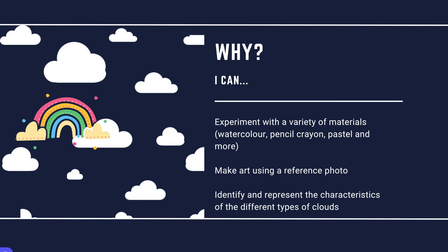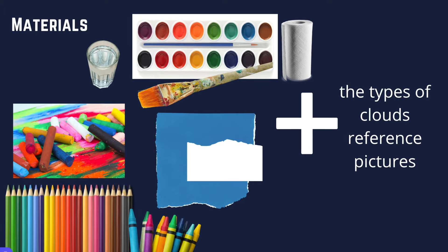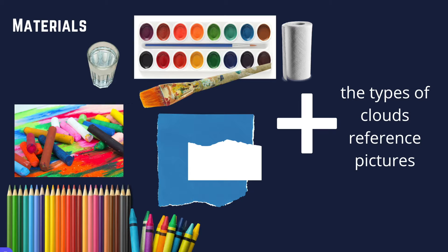For materials, use what you have at home. Blue construction paper works nicely — you can experiment with white pastel, pencil crayon, or crayon on top of it. I'm also using watercolor paints, which require a brush, paper towel, and water. For shading, some clouds have gray in them, so a pencil with a Q-tip works well. You'll also need the cloud reference pictures I've provided — view them on screen or print them out.